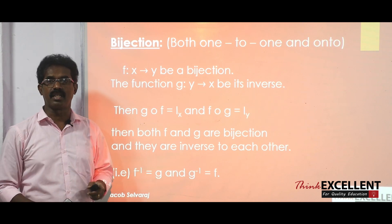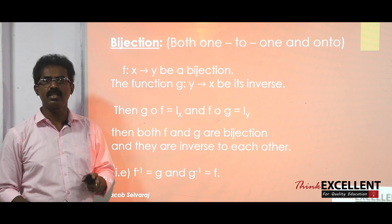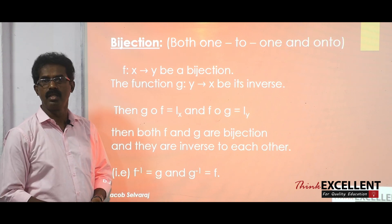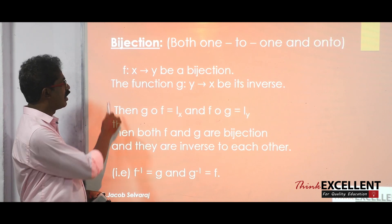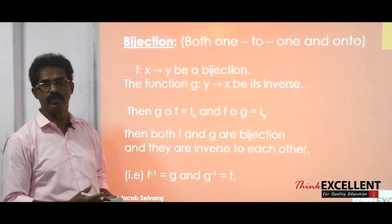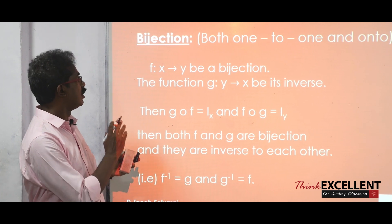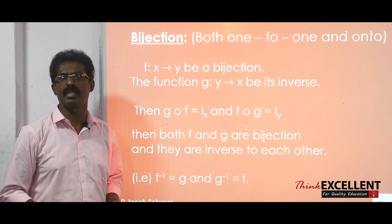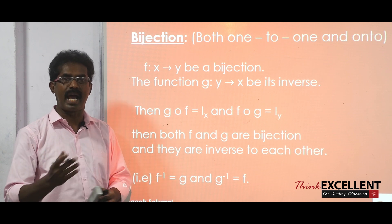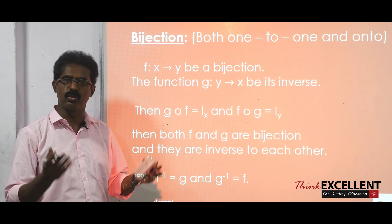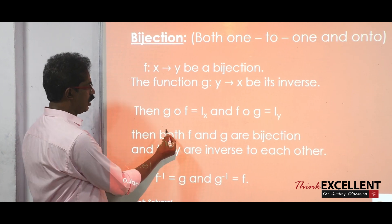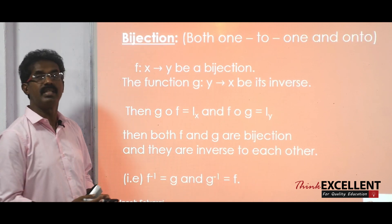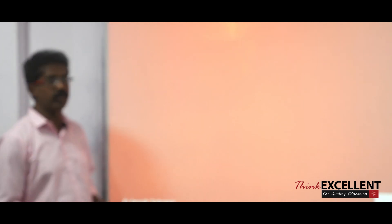The next one is bijection or bijective function. 'Bi' means two, so bijective function means if it satisfies both — it is both one-to-one and onto — we say it is bijective. Suppose f is a function from X to Y and g is a function from Y to X; it is a bijection if f and g are inverses to each other. You find f∘g = I and g∘f = I, then we say they are inverses to each other, and you can say it is a bijection or they are invertible.